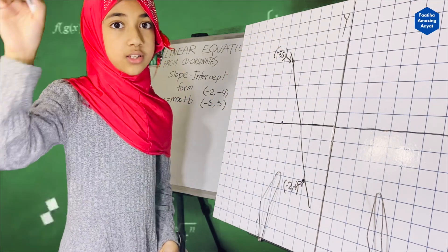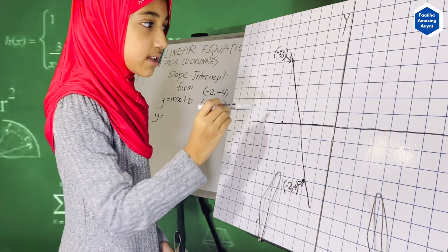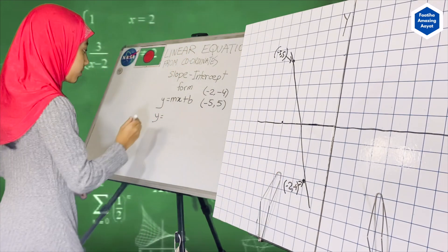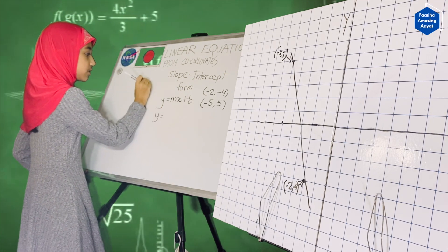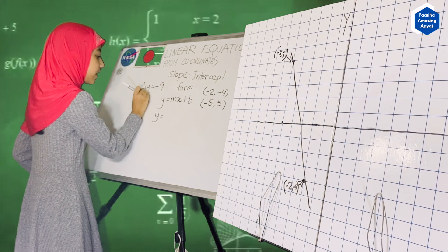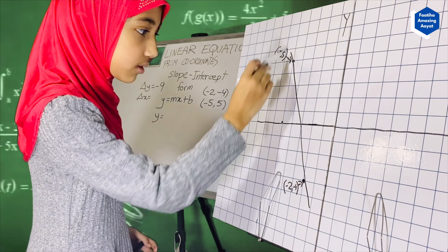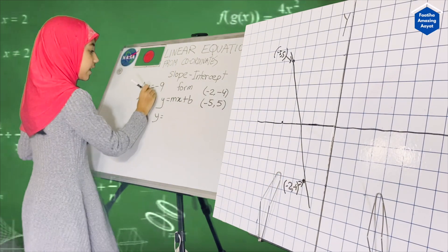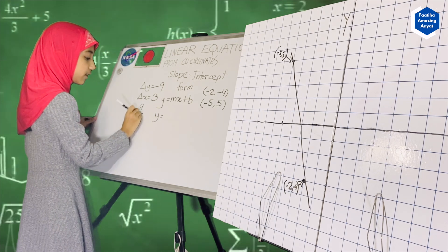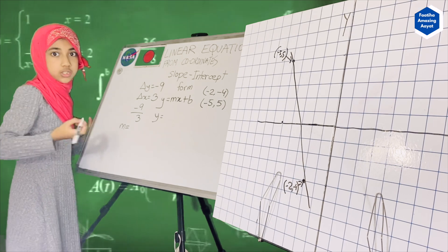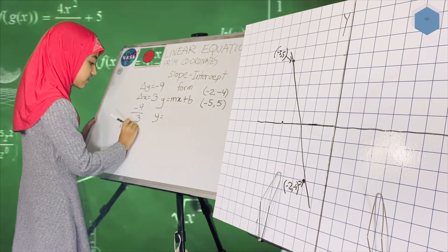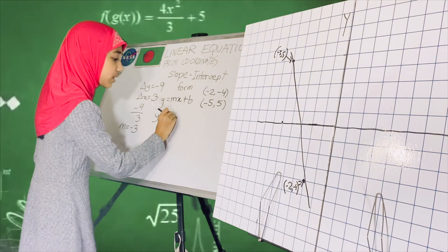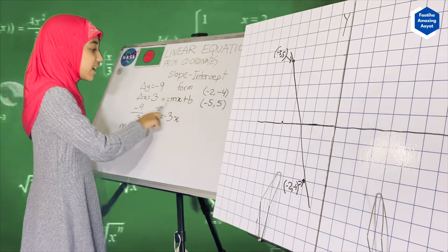We always have to do delta y divided by delta x. My delta y is negative 9, while my delta x is 3. So if you do minus 9 divided by 3, you get that your slope — or m — is minus 3. So we already found the slope, minus 3. Minus 3 is the coefficient of x, so we put down the x right here. Now we have to figure out where the y is actually intercepting.